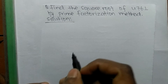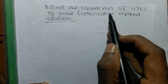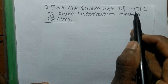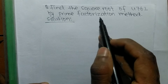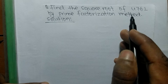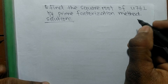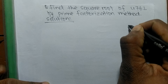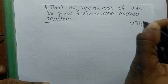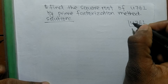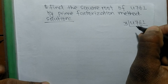Today in this video we shall learn to find the square root of 4761 by the prime factorization method. First of all we have to find out the prime factors of 4761.